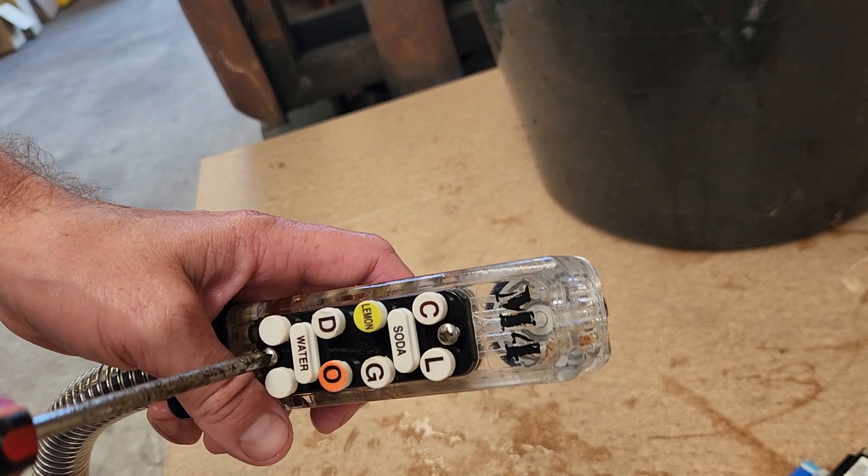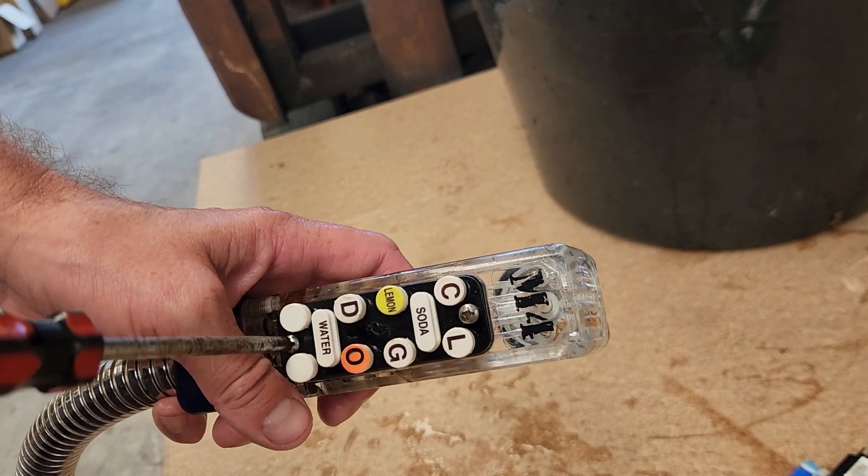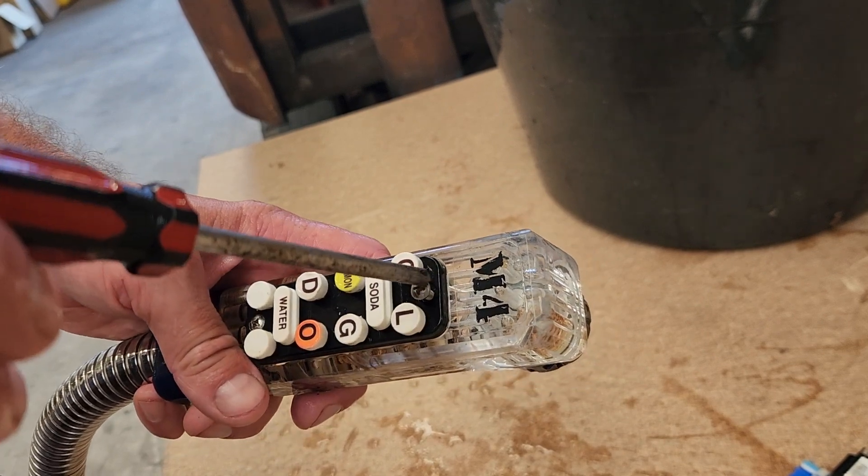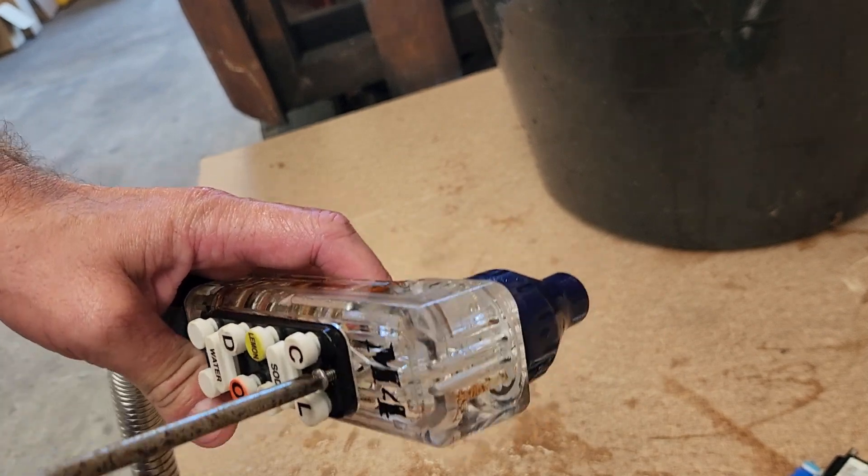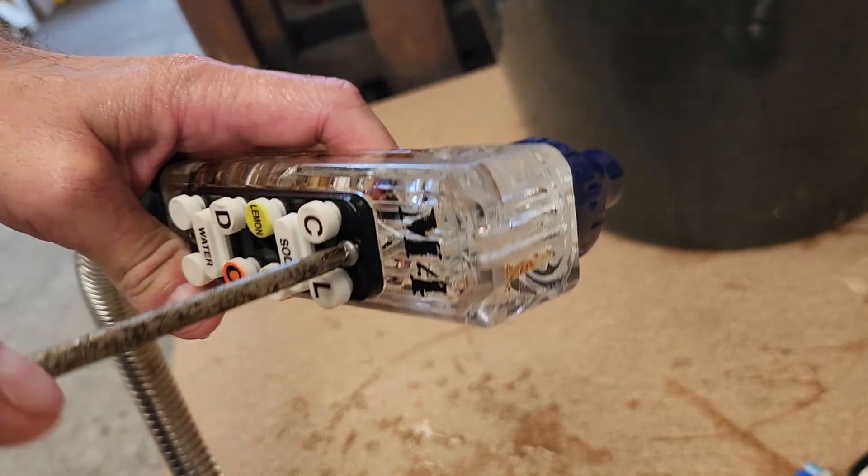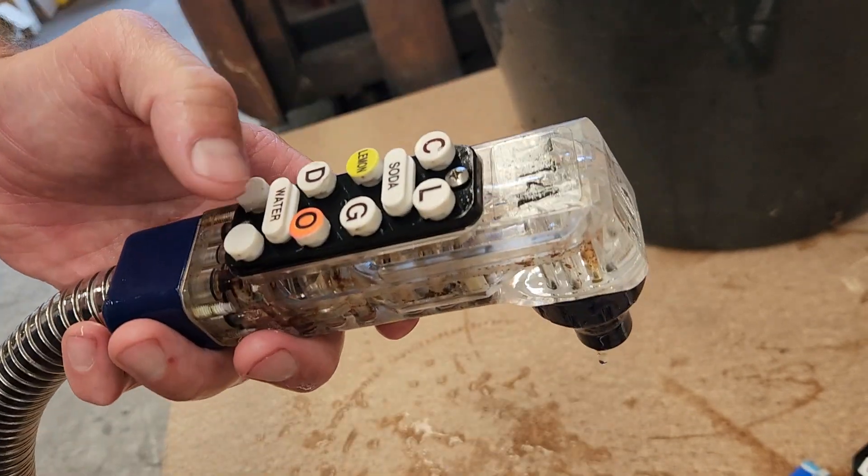And, once again, put the Phillips heads back in and tighten them up. Once again, not too tight. If you over tighten them, these things are built with such little tolerance that, simply by over tightening them, you can actually hold the buttons, the button plates down rather than just in place.